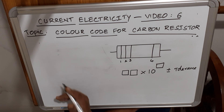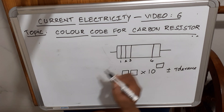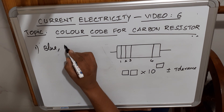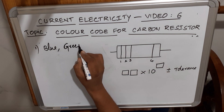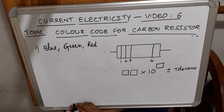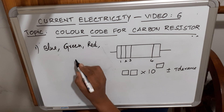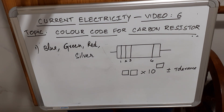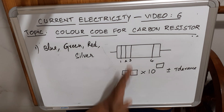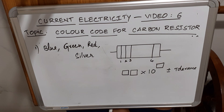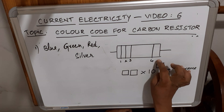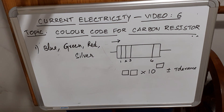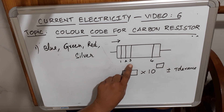For example, the color sequence is Blue, Green, Red, Silver. Colors are to be read from the left end — opposite to the single color end — not from the other end. So: first color Blue, second Green, third Red, fourth Silver.